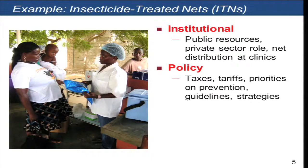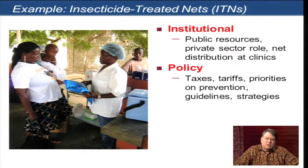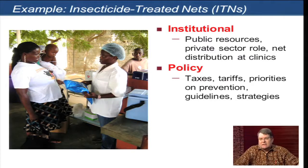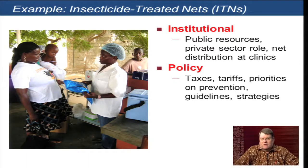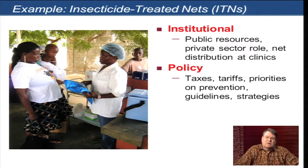At the institutional level, the public sector is the largest supplier of these bed nets, but you can also get them through the private sector — shops that sell nets, sometimes subsidized, sometimes at cost. The question is: are there enough institutional outlets so that people can get the nets? Are institutions like antenatal care clinics, child welfare clinics, schools, and private shops set up to support continued bed net acquisition and use?